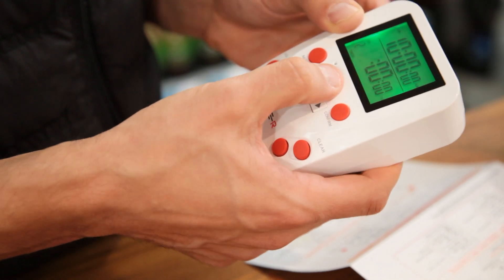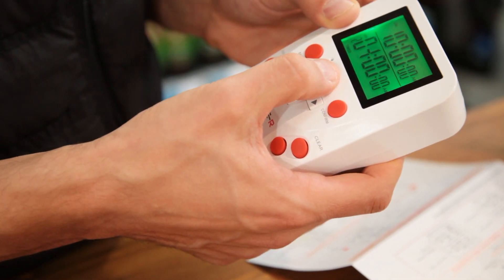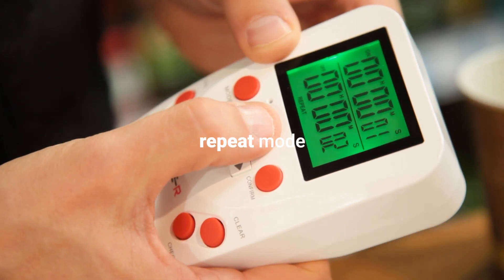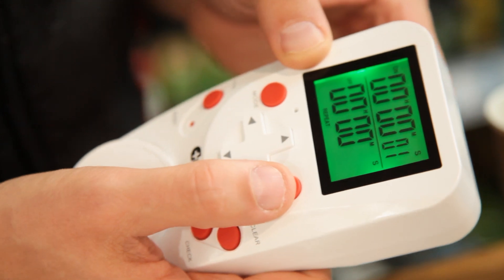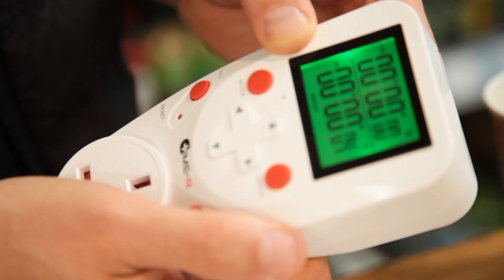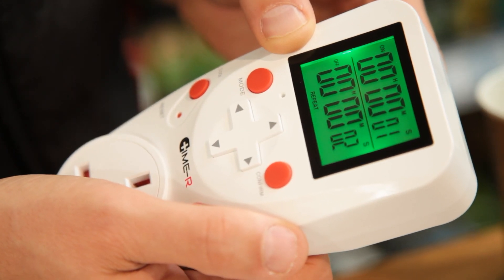When you've finished programming your times, hit Confirm to save. The next mode is Repeat Mode, which switches equipment on and off at regular intervals. In this instance, you're not setting times, but the duration of the intervals. Here we've got it set to come on for one second and switch off for four seconds.